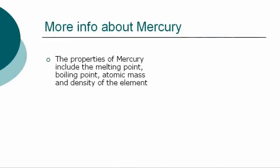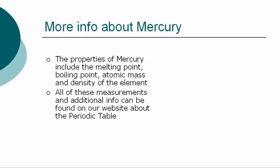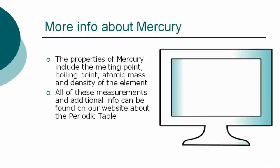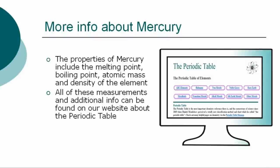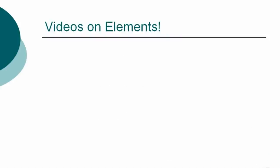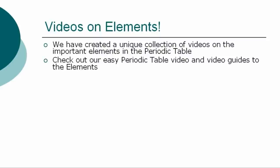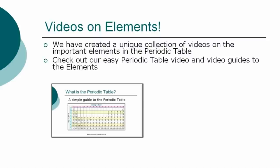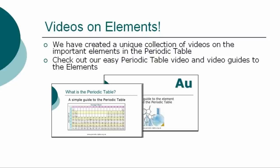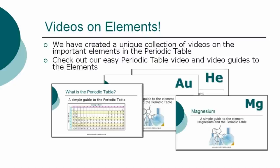The properties of mercury are classified by many other factors, including the melting point, boiling point, atomic mass, and density of the element. All of these precise measurements can be found on our website. So ends our simple guide to the element mercury. We have created a unique collection of videos on many other important elements — check them out via our website.